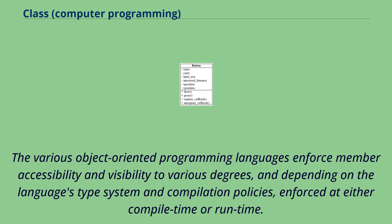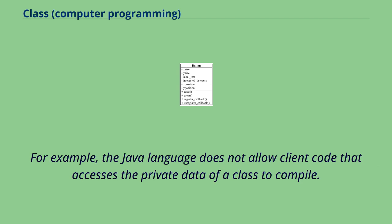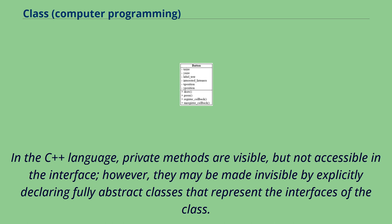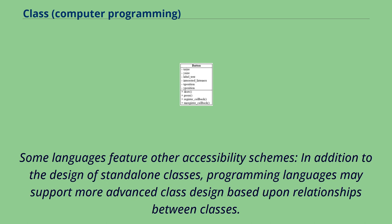The various object-oriented programming languages enforce member accessibility and visibility to various degrees, depending on the language's type system and compilation policies, enforced at either compile time or runtime. For example, the Java language does not allow client code that accesses the private data of a class to compile. In C++, private methods are visible but not accessible in the interface. However, they may be made invisible by explicitly declaring fully abstract classes that represent the interfaces of the class. Some languages feature other accessibility schemes.